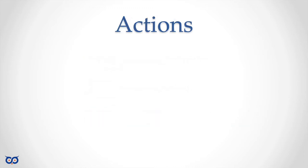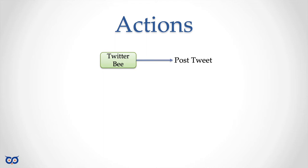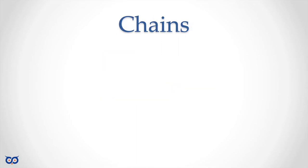In addition to emitting events, your bees can also perform actions. Your Twitter bee, for example, can perform the action of posting a tweet. So there are two things: the event it can emit and the action it can take. Your email bee might emit events when you have a new email, and it can also do actions like send an email. Once you have this ability, you can create chains — that's when you link bees together.